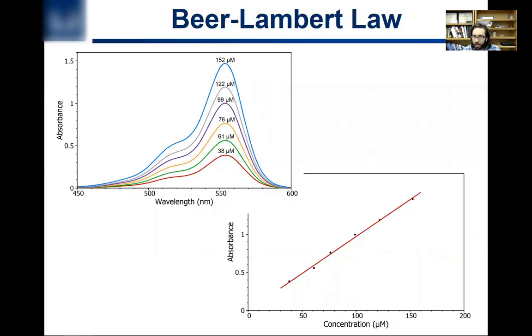All right. So that is a very quick primer on UV visible absorption spectroscopy, useful in identifying the structure of transition metal complexes and a wide number of other parts of chemistry.